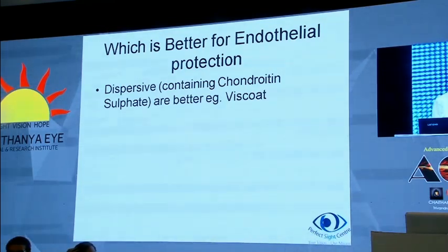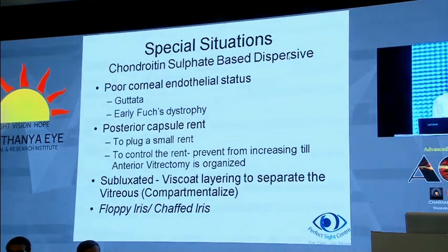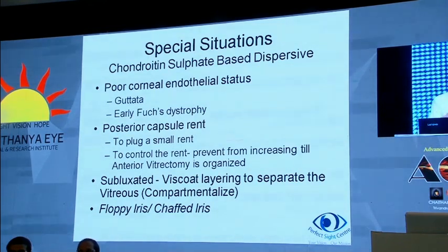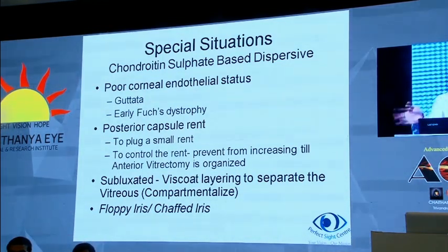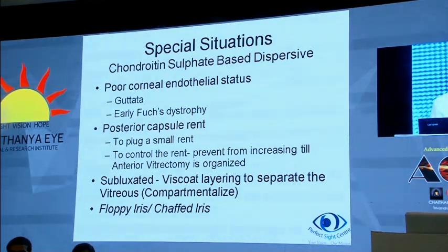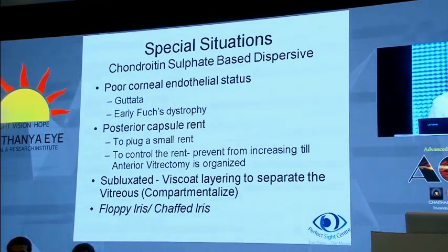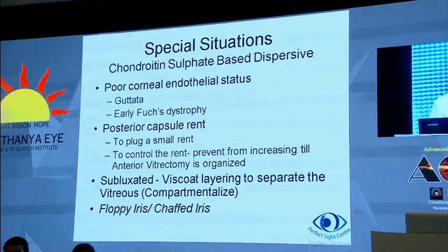In special situations, chondroitin sulfate-based dispersives are useful for poor corneal endothelial status, such as in guttata and early Fuchs dystrophy — it coats and helps tide over difficult surgery. In posterior capsular rents, it can plug a small rent or control the rent — when a rent occurs, immediately push in some Viscoat to prevent it from increasing until anterior vitrectomy is organized. In subluxated cataracts, Viscoat layering is used to separate the vitreous — you layer it in the area of subluxated zonules to compartmentalize, keeping vitreous behind while allowing irrigation to continue, preventing mixing. In cases of floppy or chaffy iris, it can also be used to advantage.